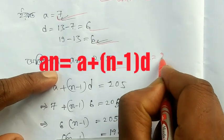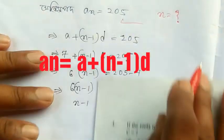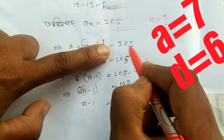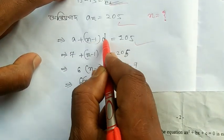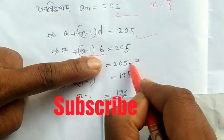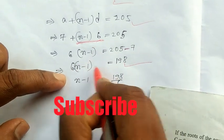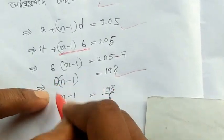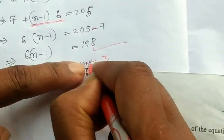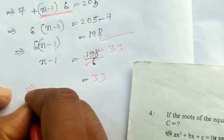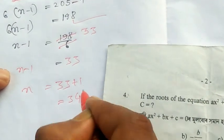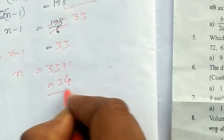We can write Tn equals a plus n minus 1 times d equals 205. A equals 7, so 7 plus 6 times n minus 1 equals 205. 205 minus 7 equals 198. 198 divided by 6 equals 33. Then n minus 1 equals 33, so n equals 34.